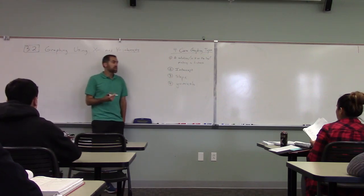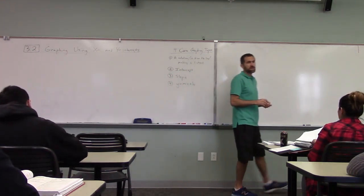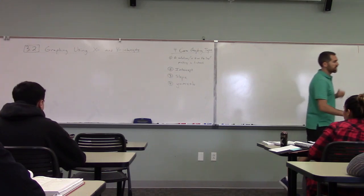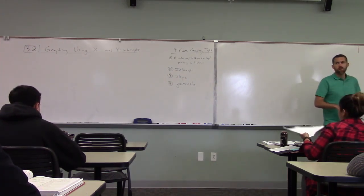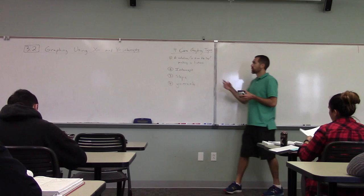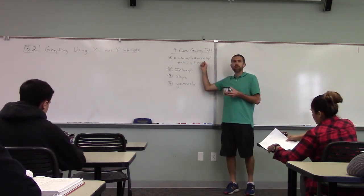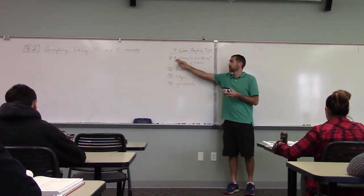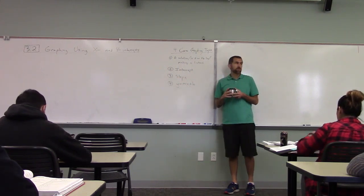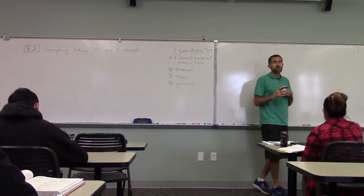If you can get those four things down, you can graph any straight line. The one we talked about yesterday is 3.1, and this goes 3.1, 3.2, 3.3, 3.4. The book order is exactly the order I would teach it.